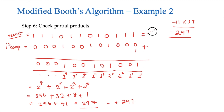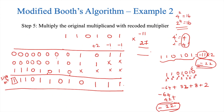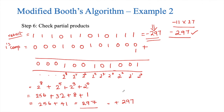Therefore, minus 11 multiplied by 27 equals minus 297. Using the Modified Booth Algorithm also, we reached minus 297. Looking at the number of summands, we have only 3 sets instead of 6, which would be the case with standard binary multiplication. By reducing the summands to 3, the multiplication is faster. I hope the explanation was clear. Thank you for watching the video.